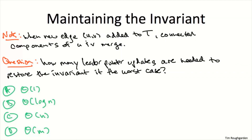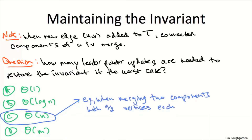Consider the case when a new edge is added and two connected components fuse into one. In the worst case, how many leader pointer updates might be required to restore the invariant? The answer, somewhat alarmingly, is a linear number — O(n) pointer updates. One easy way to see that: imagine the very last edge Kruskal adds, the one which fuses the final two connected components into one. Those two components might have exactly the same size, N over 2 vertices each. Going from two leaders to one, one of those sets of N/2 vertices will have to inherit the leader pointer from the other side.